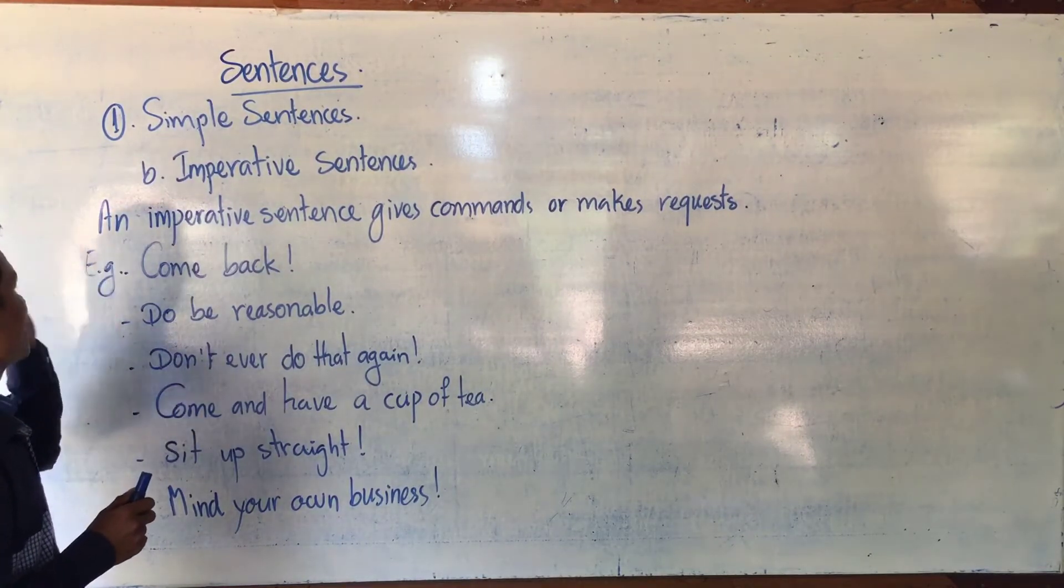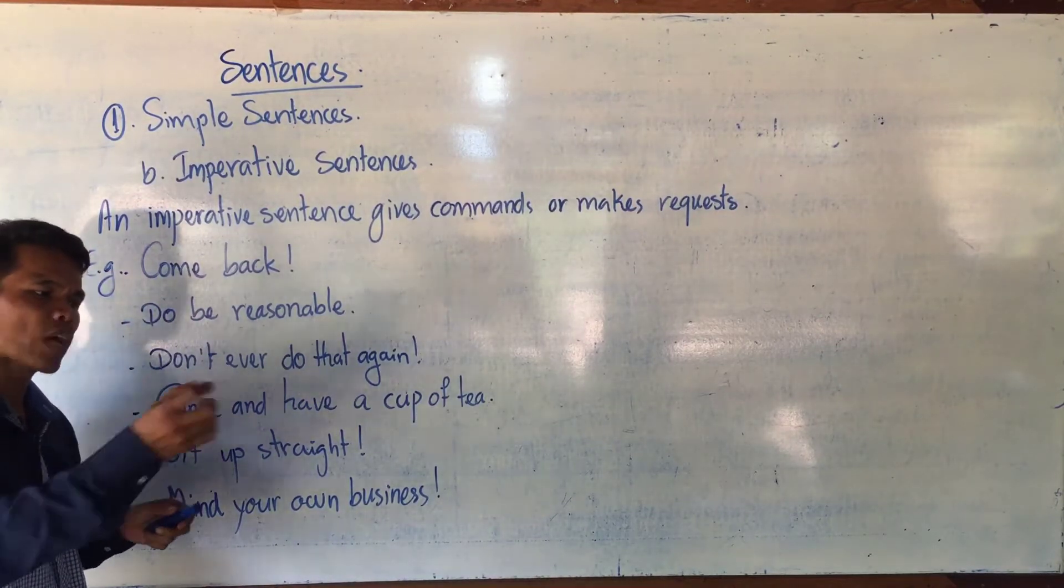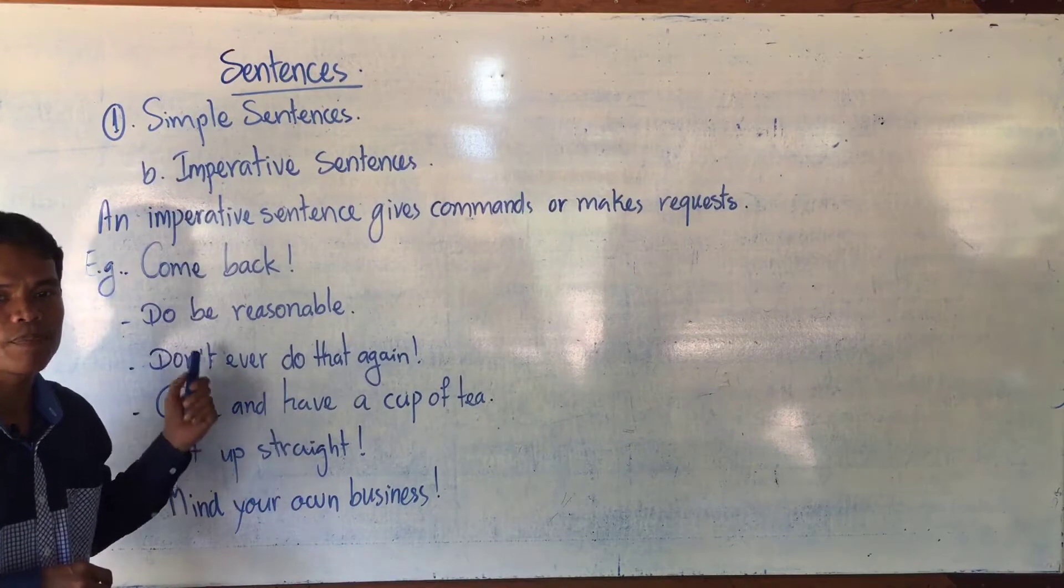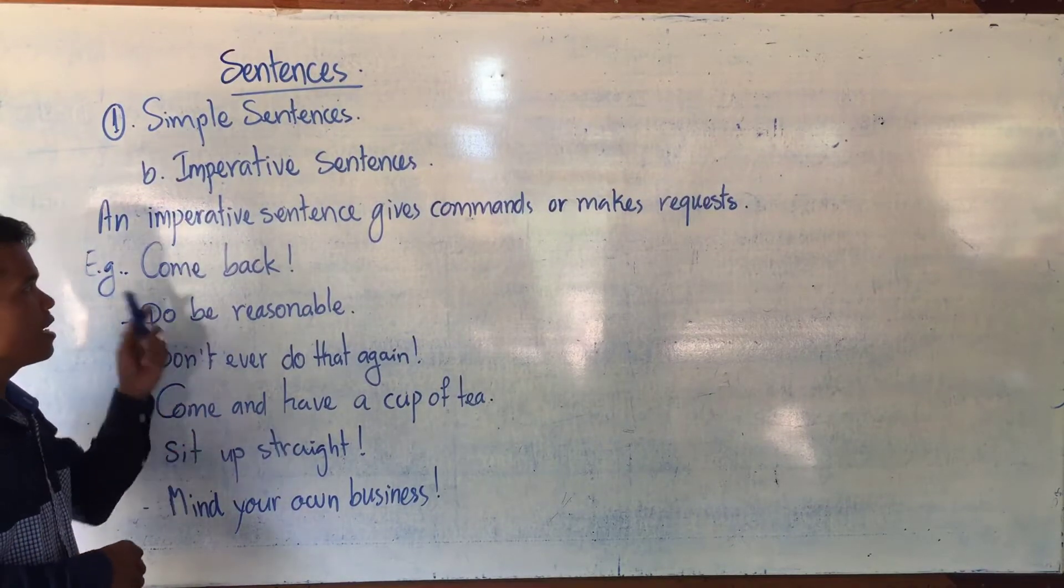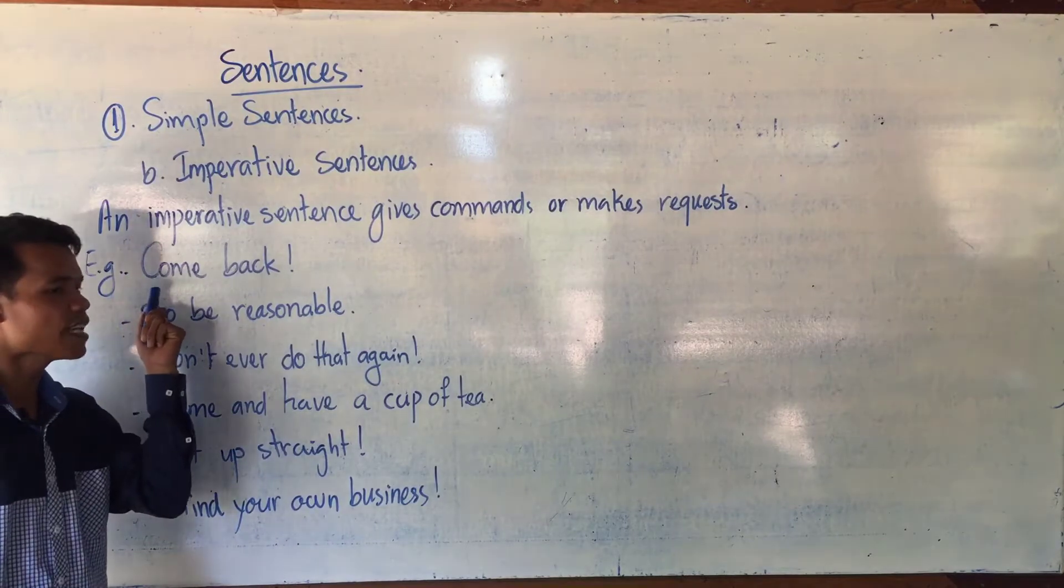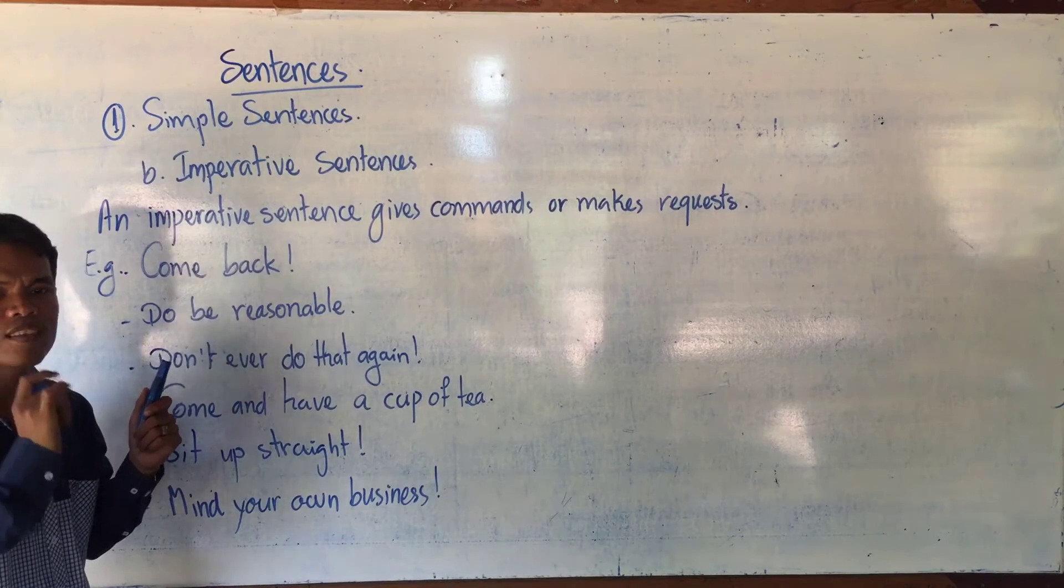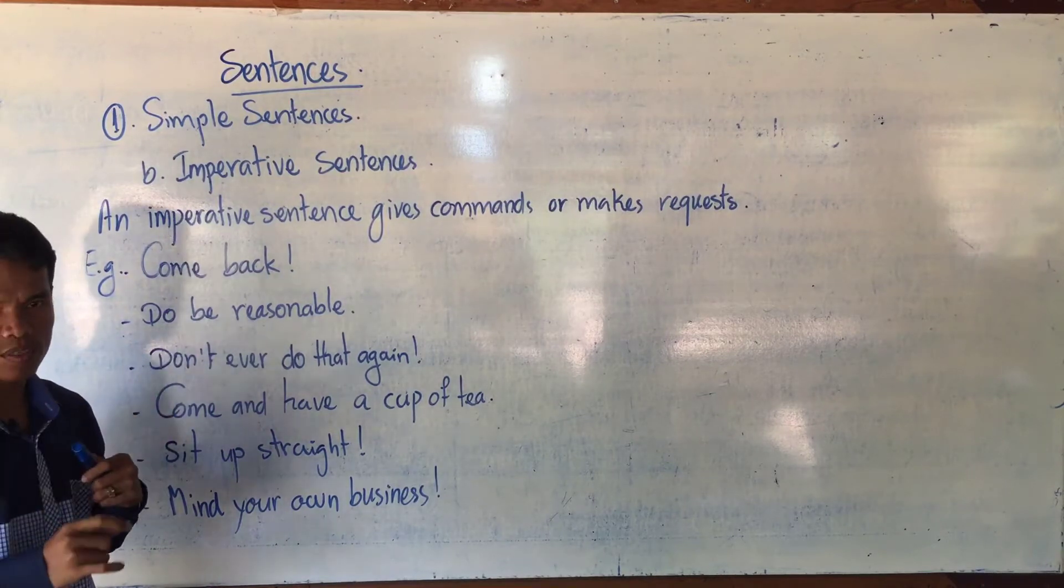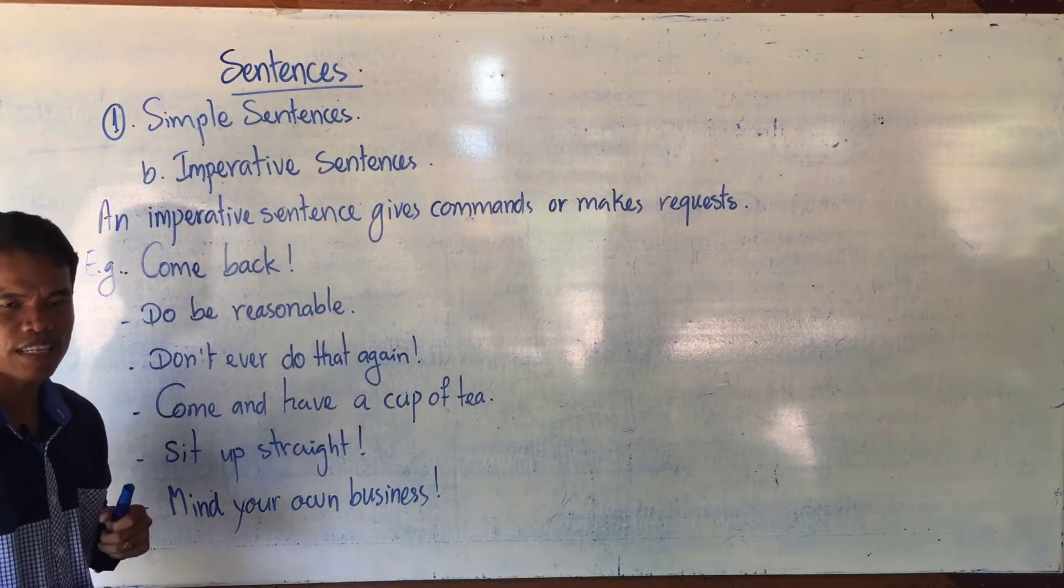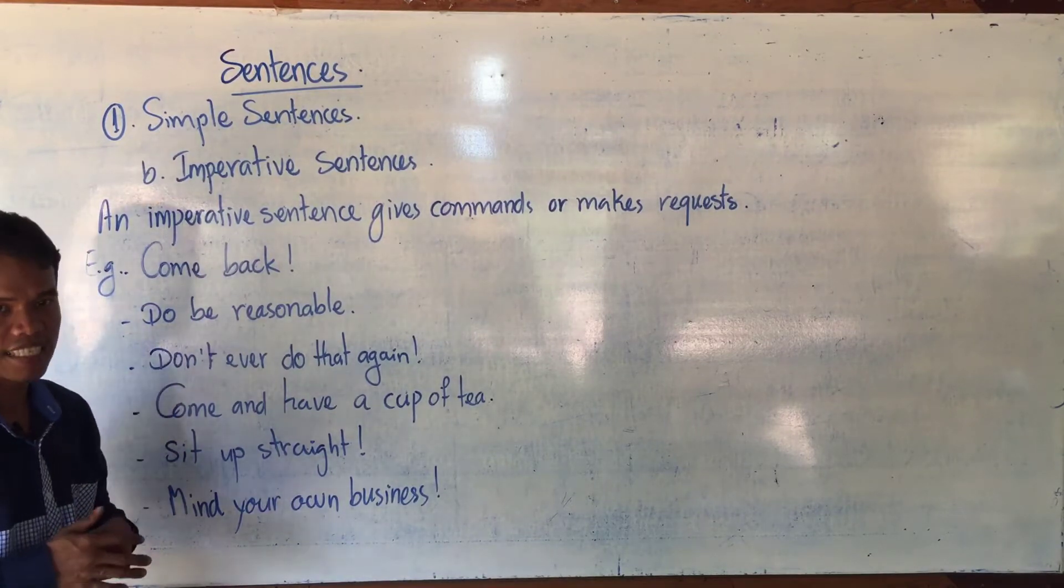Actually, you can write you come back. But when you write you come back, it is not an imperative sentence. An imperative sentence usually begins with base form verb. Subject has already been known. Actually, it is the second person. Who is the second person? You. You is called hidden subject.